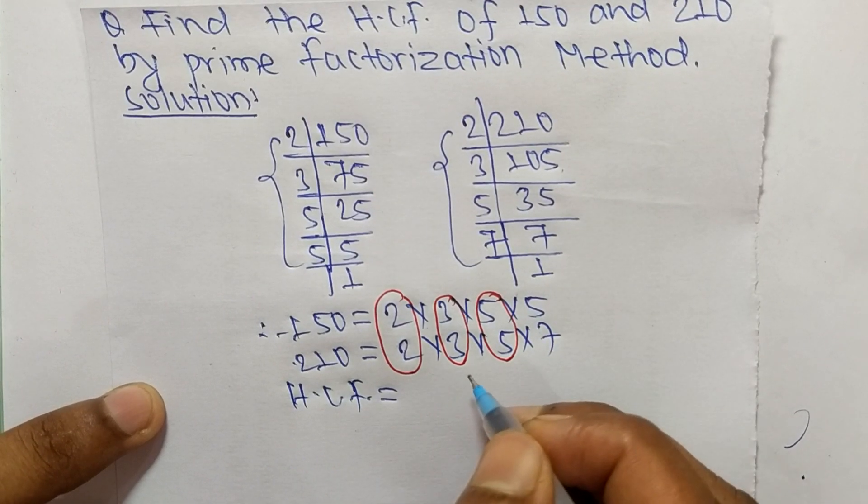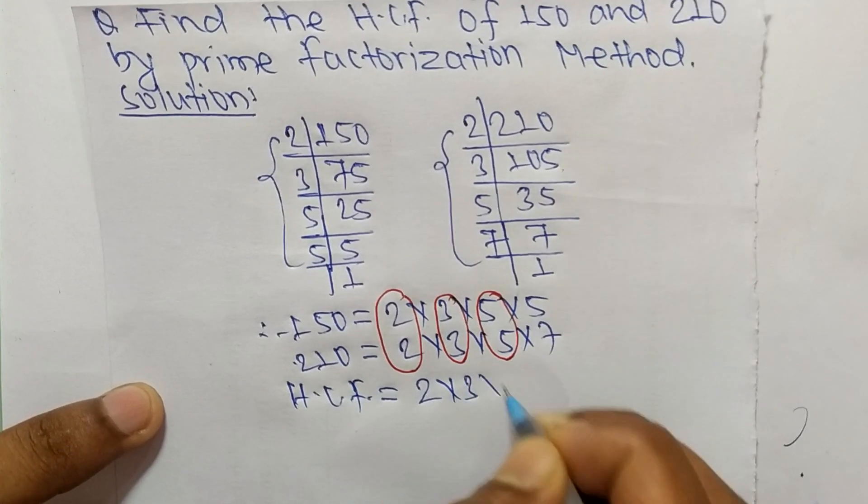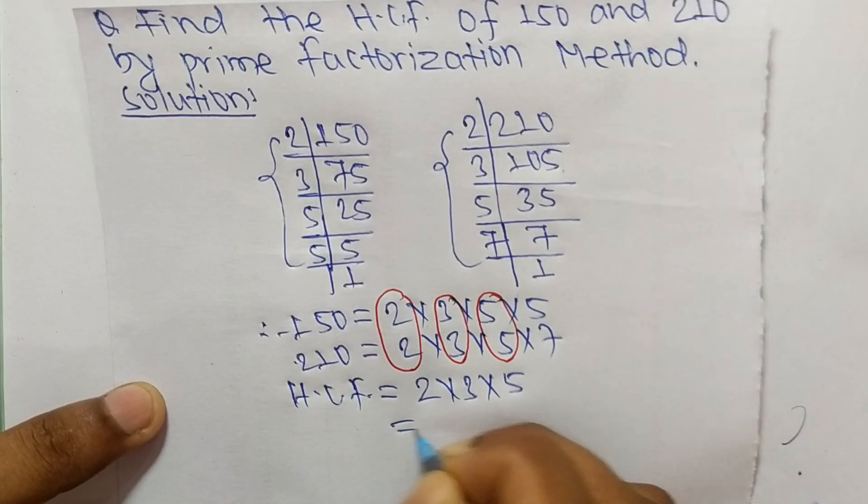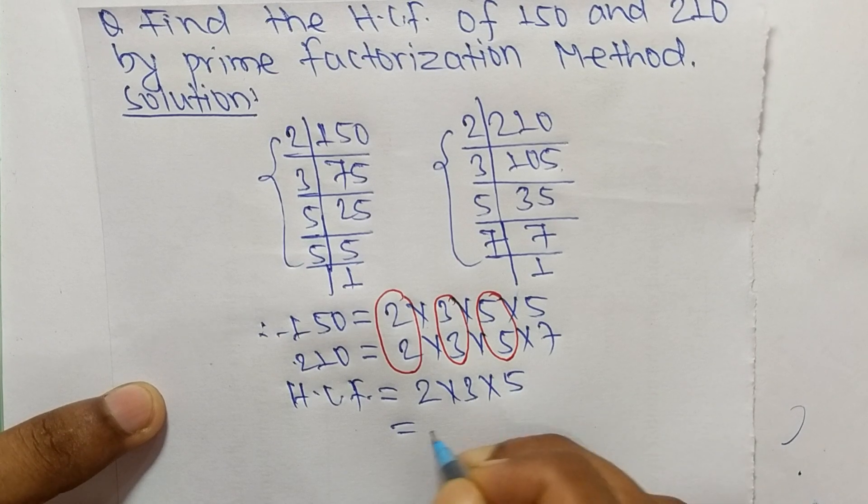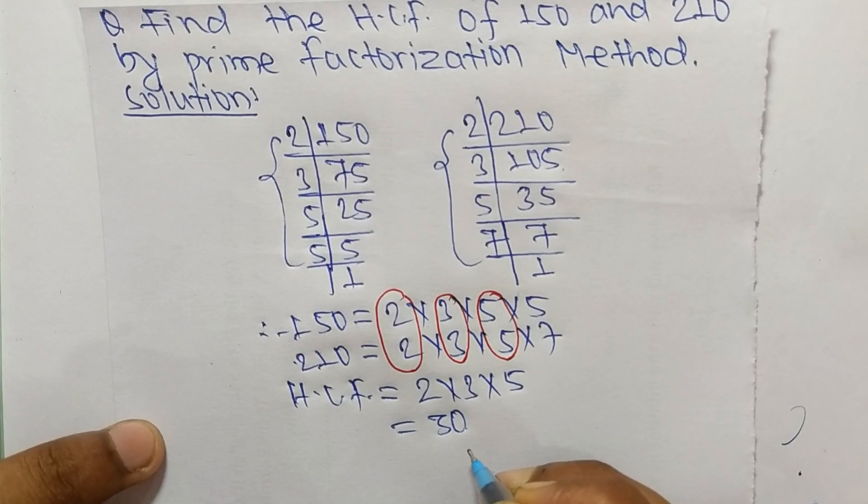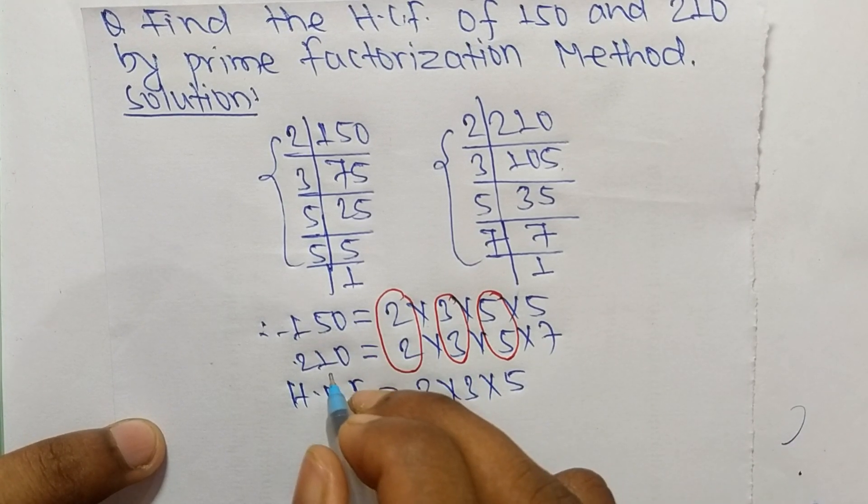The common factors we have are 2, 3, and 5. So it is 2 times 3 equals 6, and 6 times 5 equals 30. So 30 is the HCF of 150 and 210.